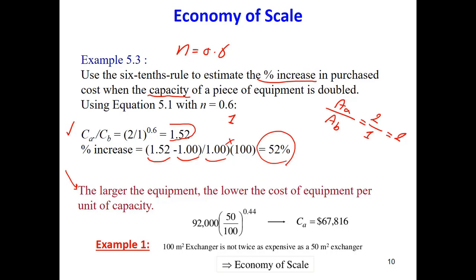And we can say in general, we can say the larger the equipment, the lower the cost of equipment per unit of capacity. So when we increase the size of the equipment, the capacity of the equipment, the cost increases, but the cost per capacity is less.